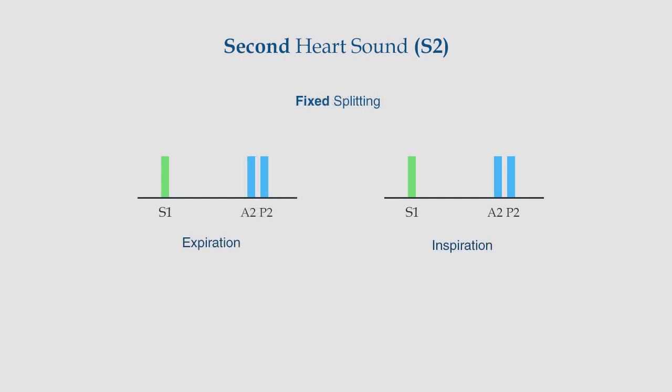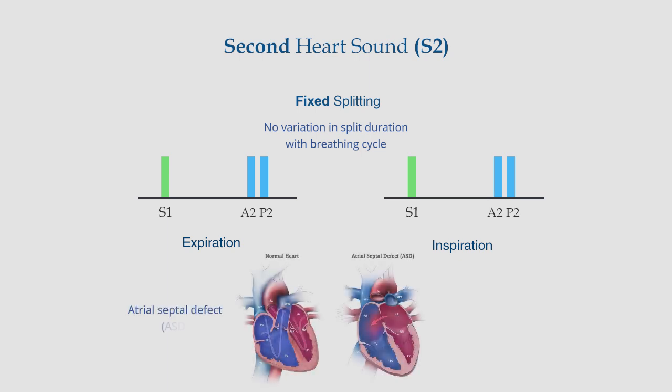Fixed splitting of S2 is said to be present when there is no variation of S2 splitting with respiration. This is a feature of the atrial septal defect. In this condition, the right ventricular stroke volume is larger than the left, causing a wide splitting. And this splitting is fixed as well because the septal defect equalizes the pressure between the two atria throughout the respiratory cycle.